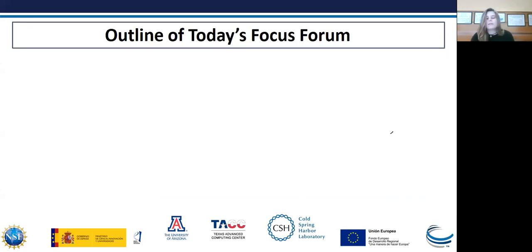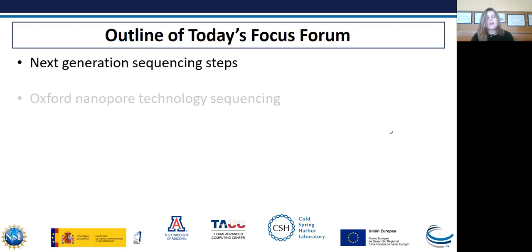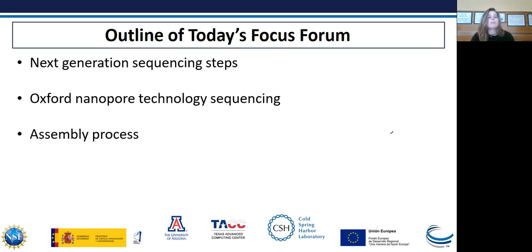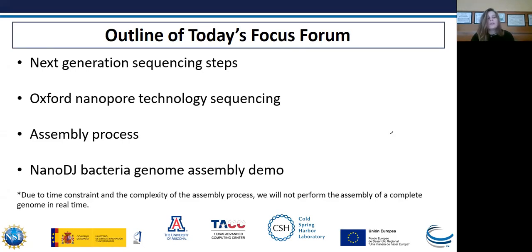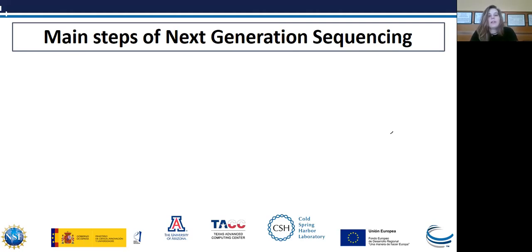Today's focus forum will be divided into different topics. First we will explain the main steps of next generation sequencing. Then we will introduce Nanopore technology sequencing. Then we will also explain the assembly process and remind you what NanoDJ is. And finally we will do a bacterial genome assembly demo with NanoDJ. Due to time constraints and the complexity of the assembly process, we will not perform the assembly of a complete genome in real time. Let's start with a brief introduction of the main steps of next generation sequencing to obtain a genome, from the DNA fragmentation process to the final consensus sequence.